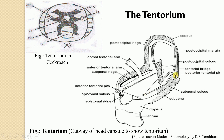Similarly, the posterior tentorial arms arise from the posterior tentorial pit. The posterior tentorial pit shows inward growth which gives rise to the formation of the posterior tentorial arm. This posterior tentorial pit lies at the lower end of the post-occipital suture, and as we learned in the previous lecture, the posterior tentorial pits are always present on the post-occipital suture. This is the point of origin for the posterior tentorial arm.